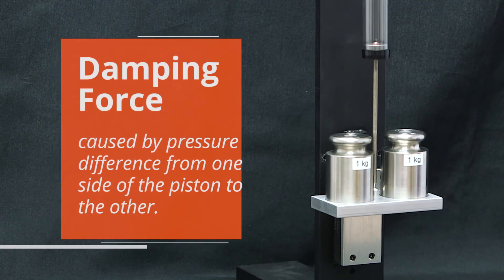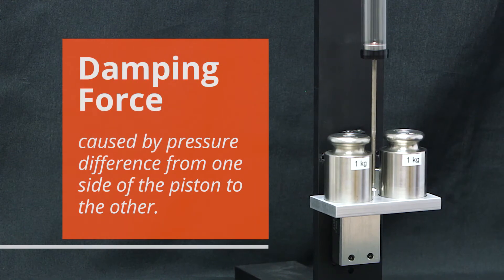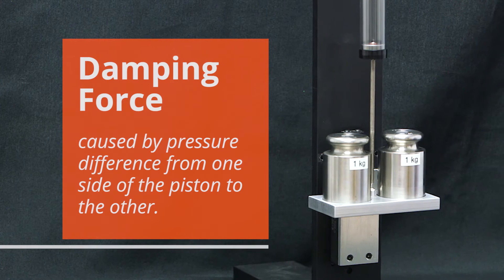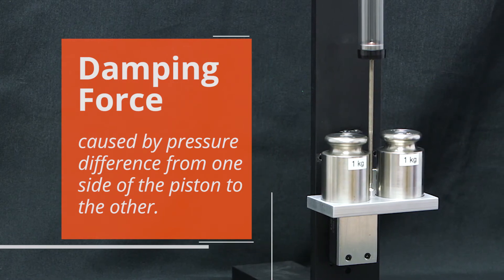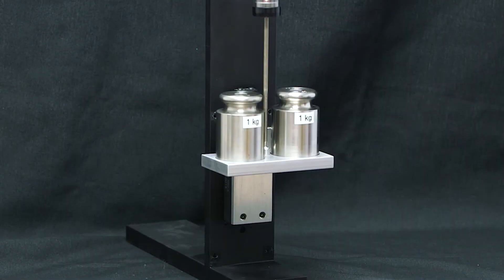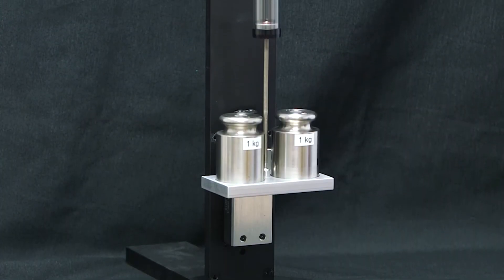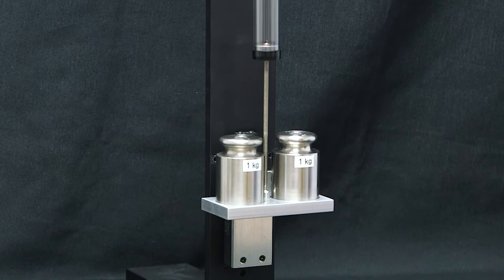We attach a connecting rod to the piston that accommodates misalignments between the dashpot and the mass being damped. The damping force is caused by a pressure difference from one side of the piston to the other. Since the rod side of the piston is open to the atmosphere, it is always at atmospheric pressure. When the piston moves, pressure on the other side of the piston changes, creating the damping force.